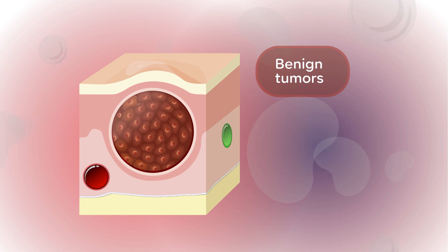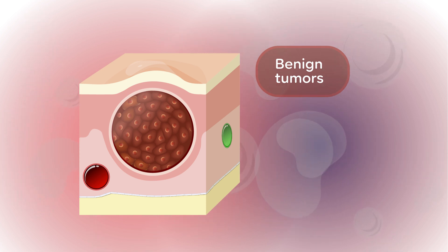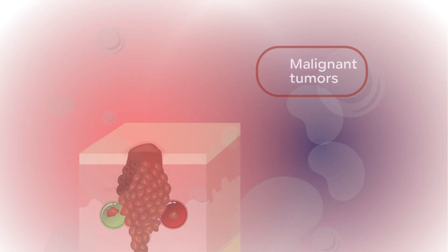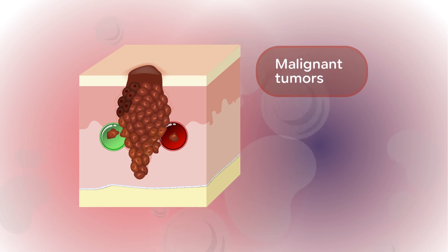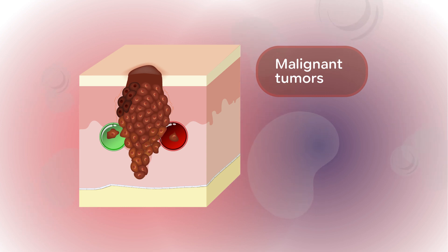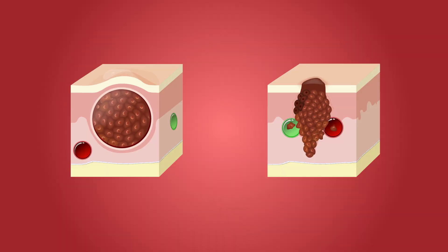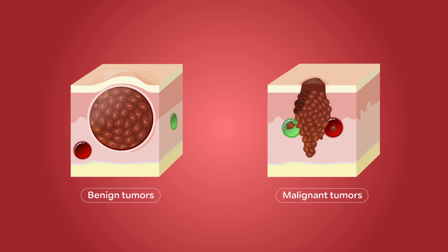Benign tumors are typically not life-threatening unless they grow in a critical location like the brain. Malignant tumors are indeed cancerous. They can invade nearby tissues and also spread to other parts of the body through the blood and lymph systems. This ability to spread is what mainly distinguishes malignant tumors from benign tumors.